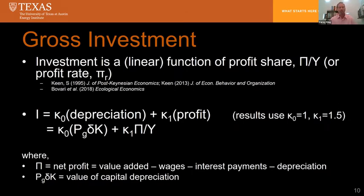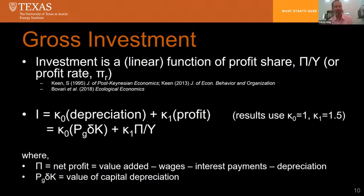Investment is a decision based on profit share. The investment function uses kappa parameters times depreciation. I show results where kappa-zero is one, meaning investment always tries to cover depreciation. If there are profits, additional investment is based on how much profit share there is — I show results where this factor is 1.5, meaning if you have $10 in profits, you invest $15 in new capital. This induces debt accumulation in the economy, informed by US data showing historically about 50 percent more investment relative to profits for companies.